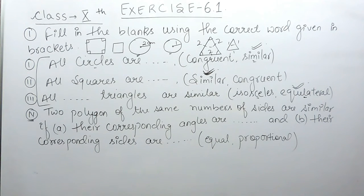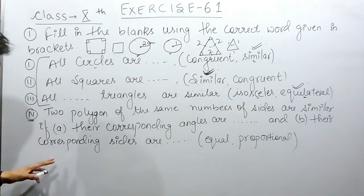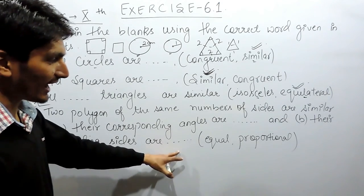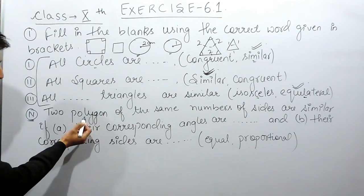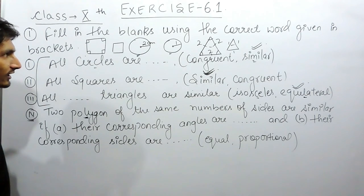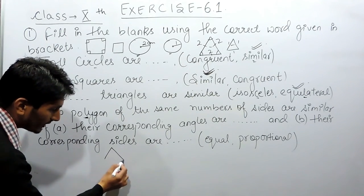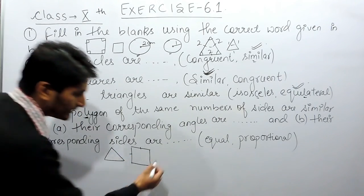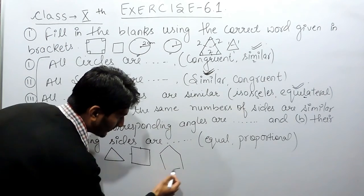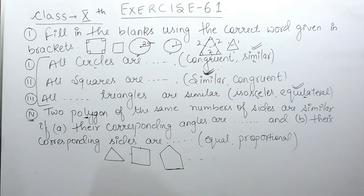Now the last statement: two polygons of the same number of sides are similar if their corresponding angles are dash and their corresponding sides are dash — you have to fill in the blanks using 'equal' or 'proportional.' First, we must know what polygons are. Polygons are closed figures having more than three sides. A triangle is the first polygon with three sides, a quadrilateral has four sides, then a pentagon, and so on.